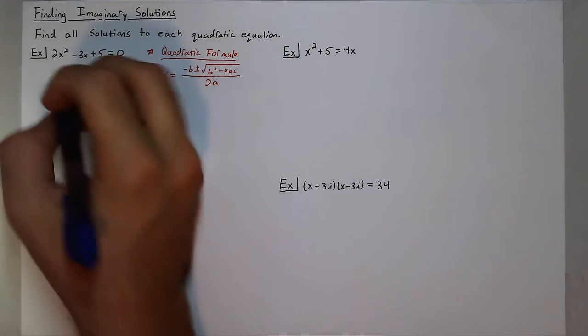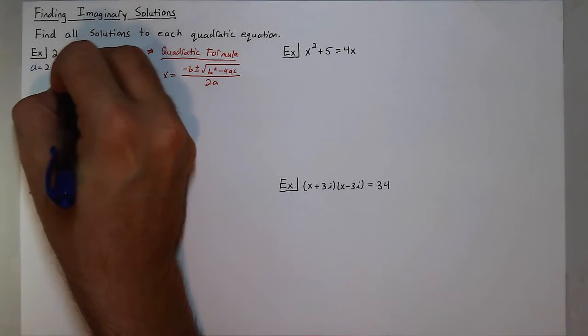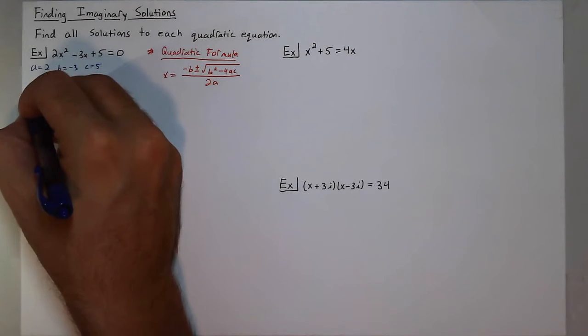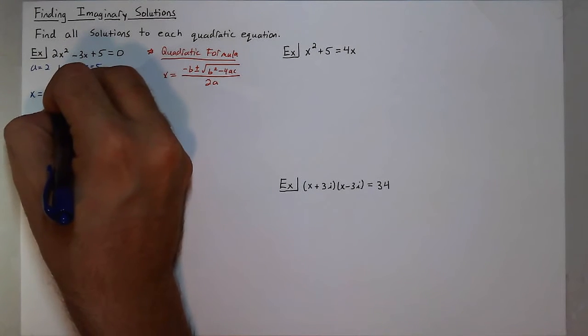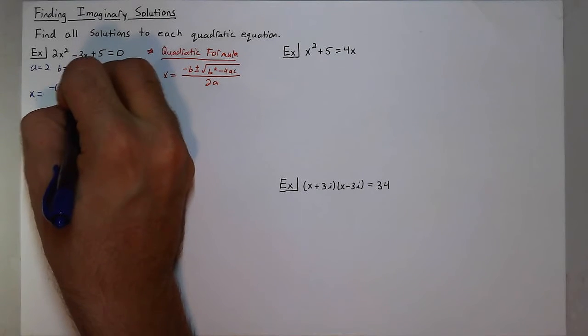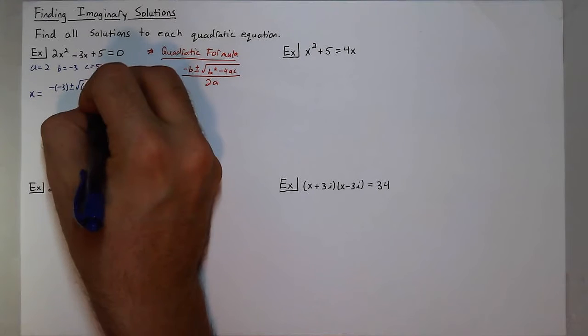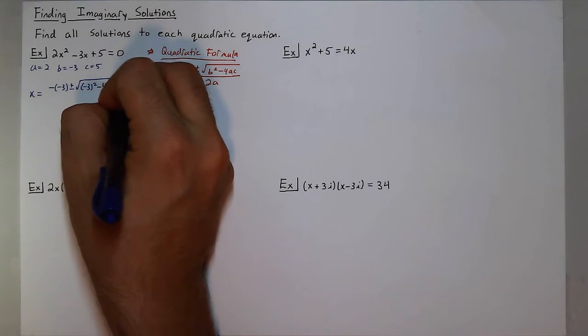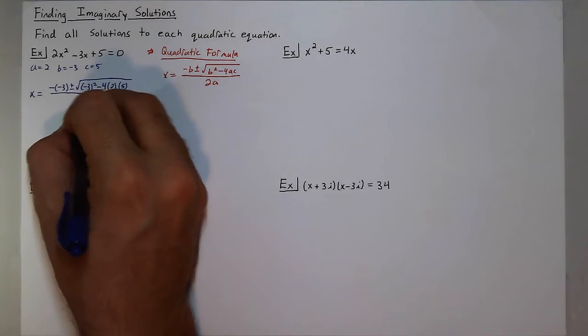So as I plug those in I see that my a value is 2, b is negative 3, and c is 5. So I get x equals negative of negative 3 plus or minus the square root of negative 3 squared minus 4 times a which is 2 times c which is 5 all over 2 times a, so 2 times 2.